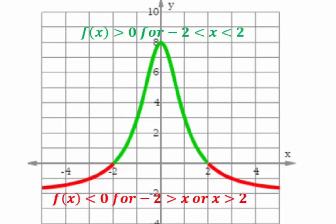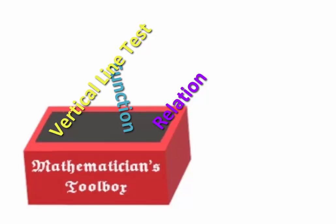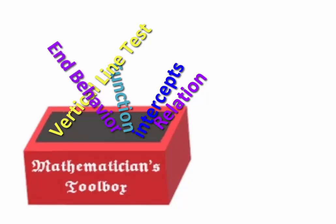Just a quick review about asymptotes. This is a good time to start an inventory in your toolbox so you have the tools ready when you need them. We started with relations, then worked with a special kind called functions where every input has a unique output, and looked at vertical line tests. We studied properties of functions like intercepts, end behavior, and asymptotes. Go review and make a toolbox so all these tools come in handy when you need them.